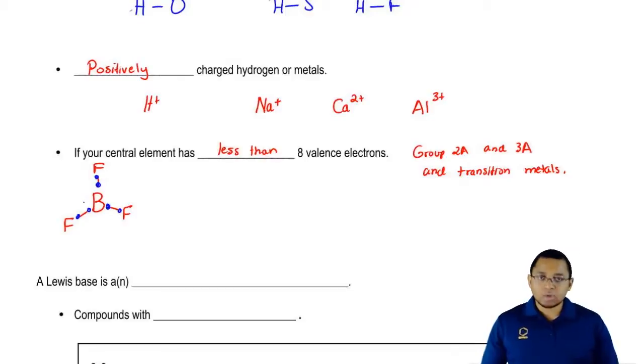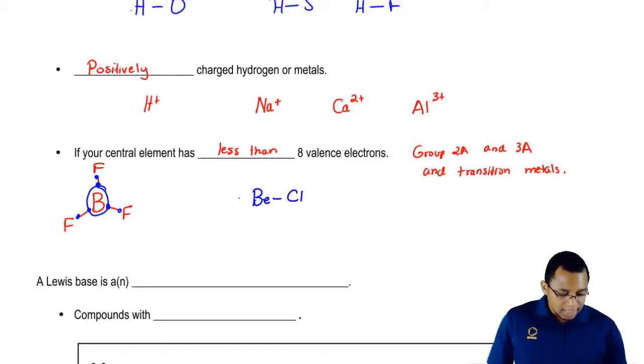We could also have Be connected to 2 Cls. Here Be has 4 electrons around it, so it can accept more electrons, another electron pair to get closer to the octet rule.